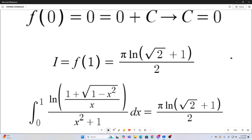So in conclusion, that nasty looking integral that we started with is pi natural log of square root of 2 plus 1 over 2. I hope you enjoyed that, and we will see you next time.